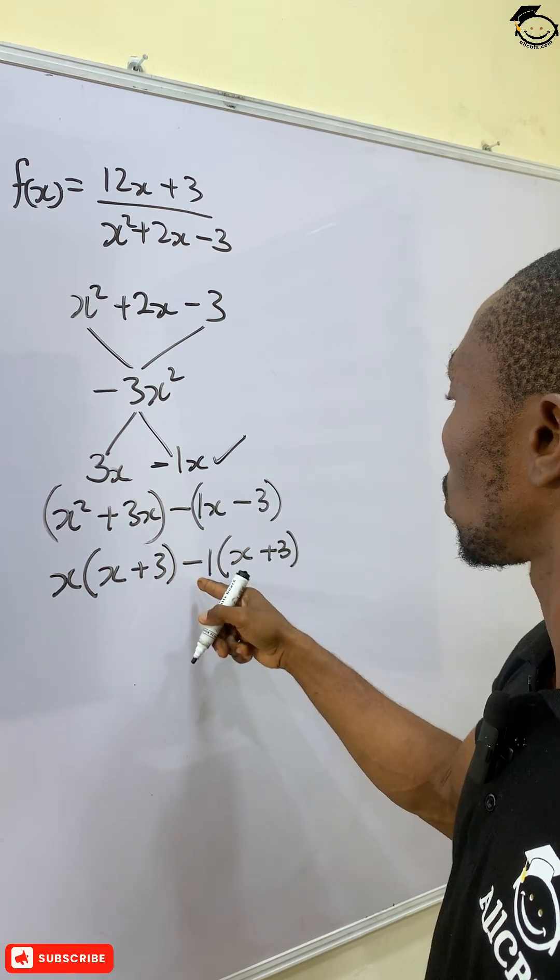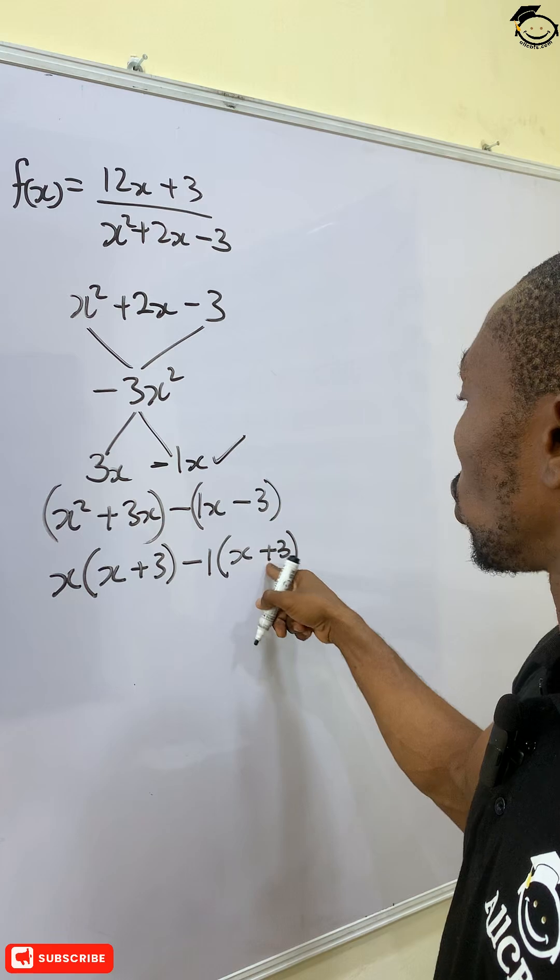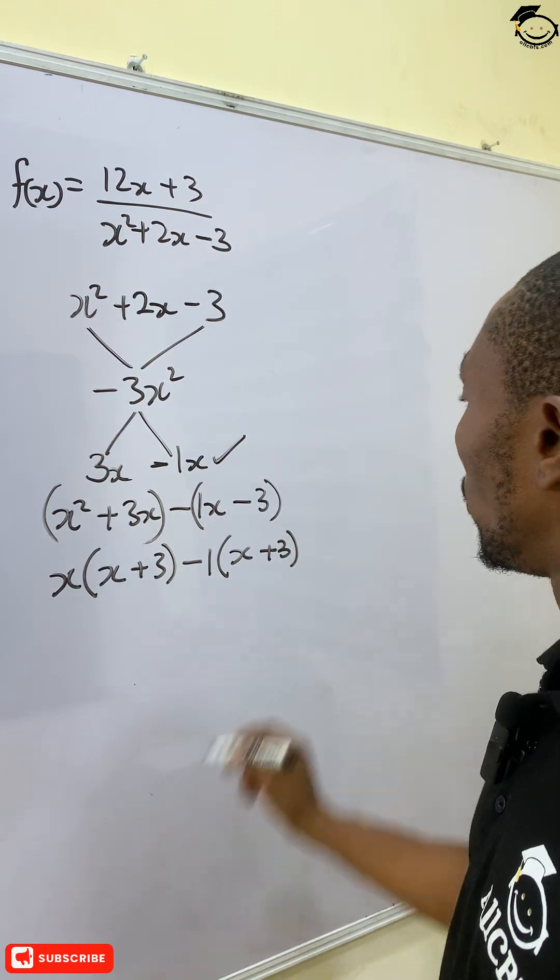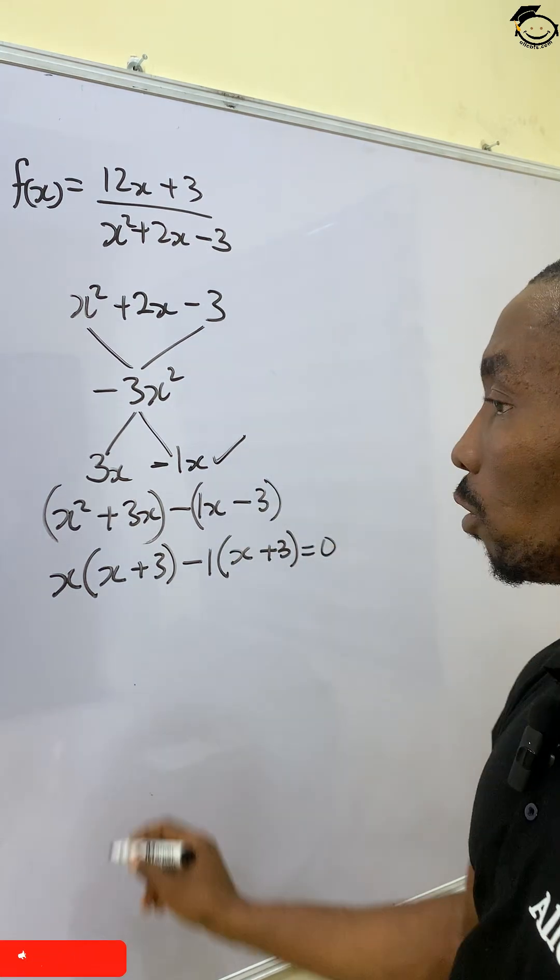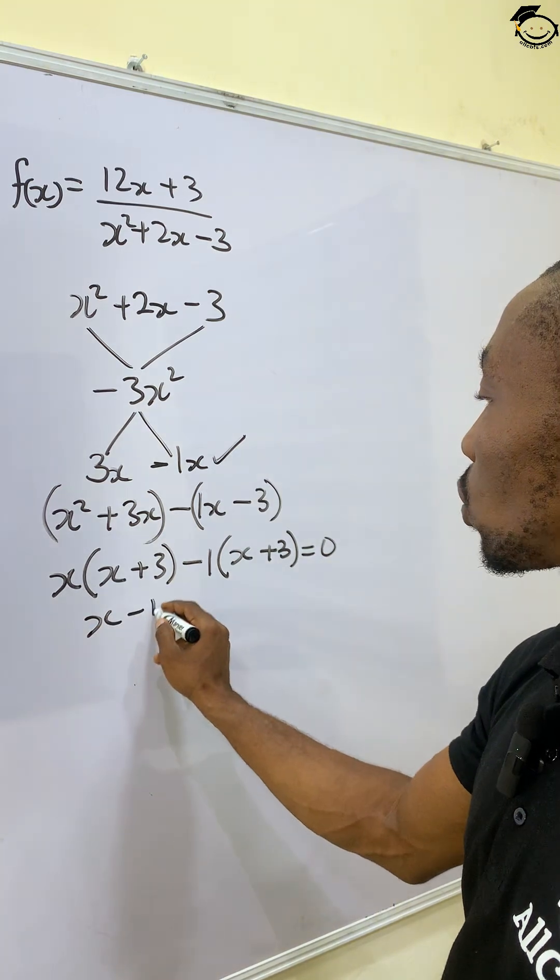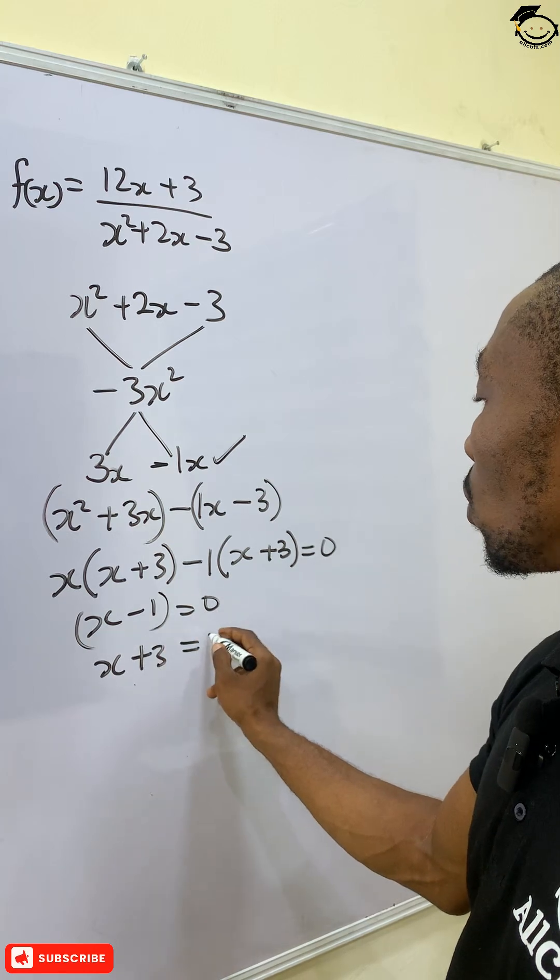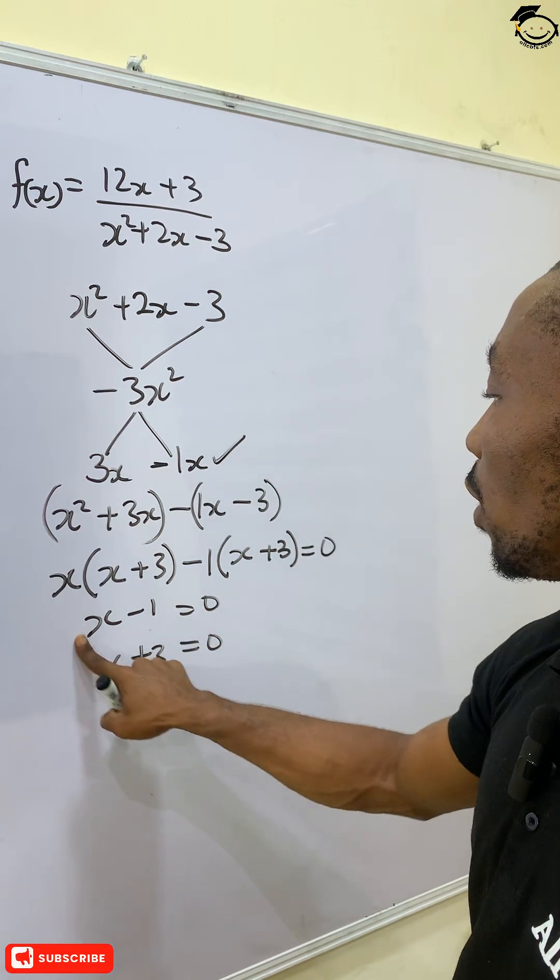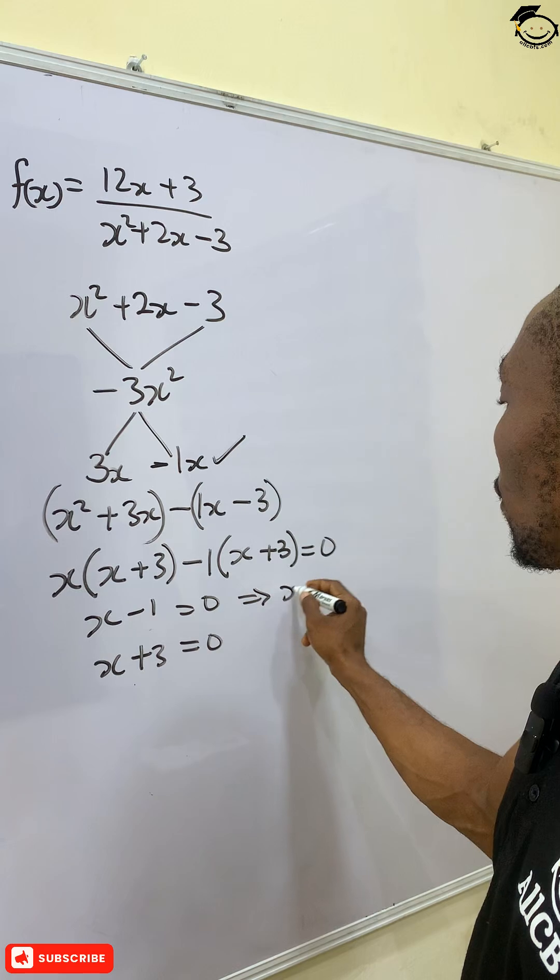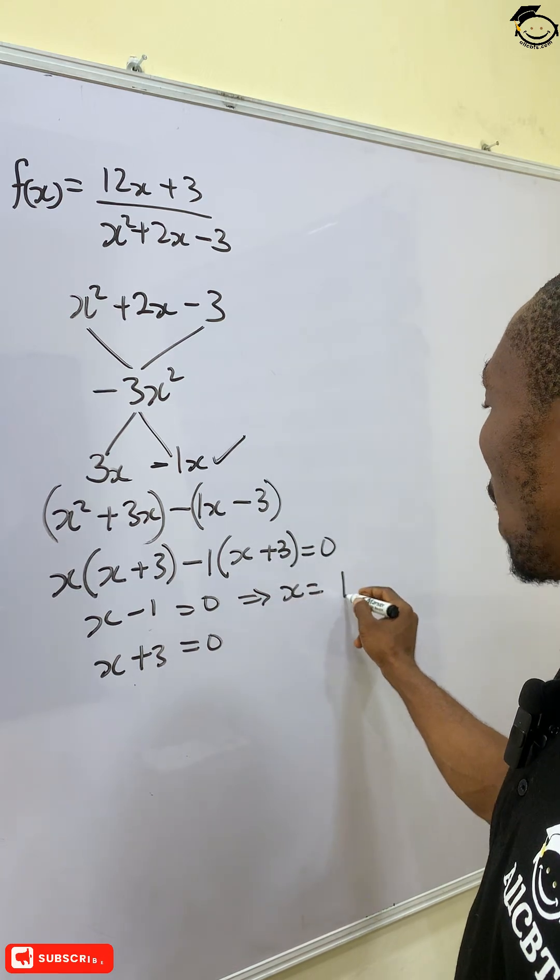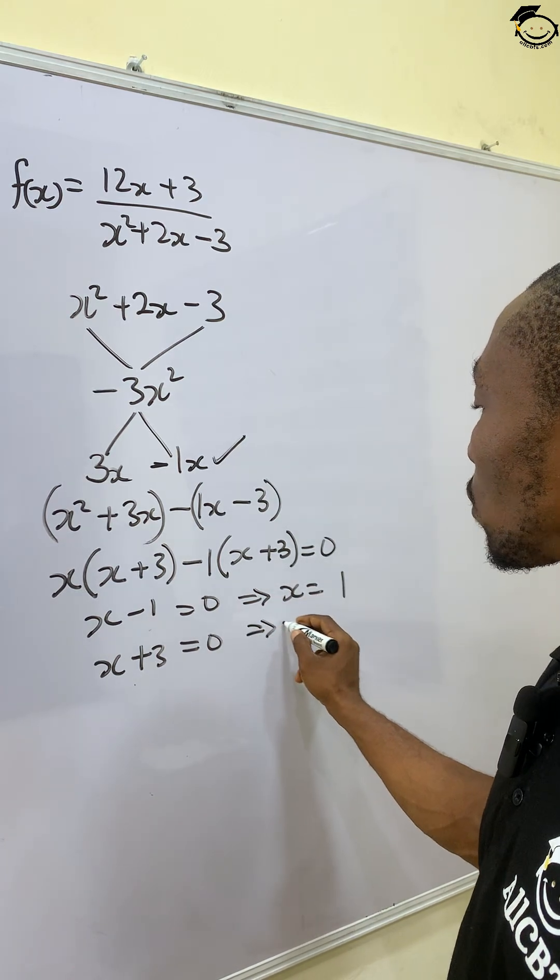Alright, while we do minus times plus, we return back to minus equals 0. So this becomes x minus 1 equals 0 and x plus 3 equals 0. Okay, so from here our value of x will become 1, and our value of x from here will become minus 3.